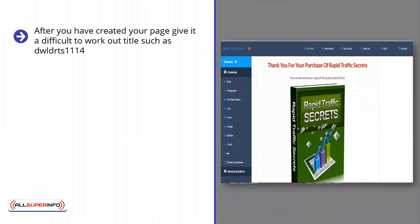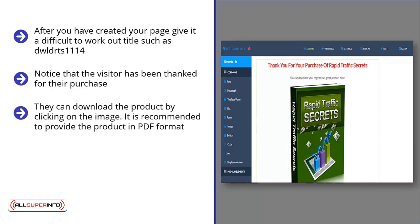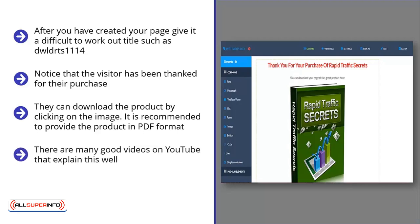After you have created your page, give it a difficult to work out title such as DWLDRTS1114. Here is what your page should look like. Notice that the visitor has been thanked for their purchase. You can also add a note that their card will show a charge from PayPal or similar. They can download the product by clicking on the image. It is recommended to provide the product in PDF format. You need to have uploaded this to your hosting using an FTP client such as FileZilla. There are many good videos on YouTube that explain this well.